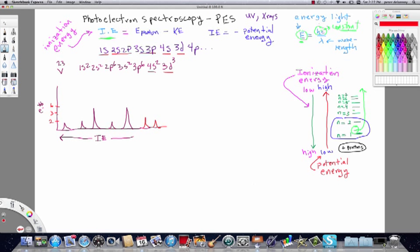we'll label it. So this is the 1S, the 2S, the 2P, the 3S, the 3P, and then this is my 3D with three electrons, and my 4S2.